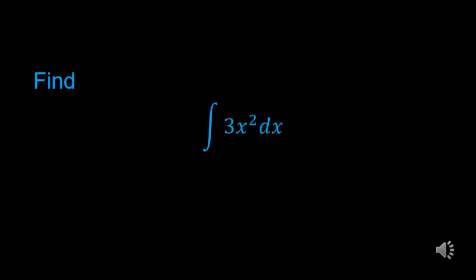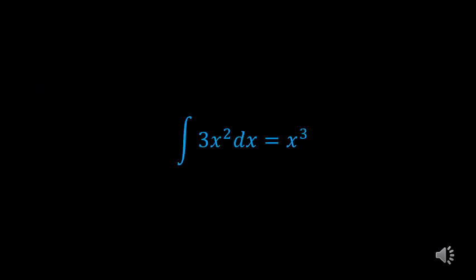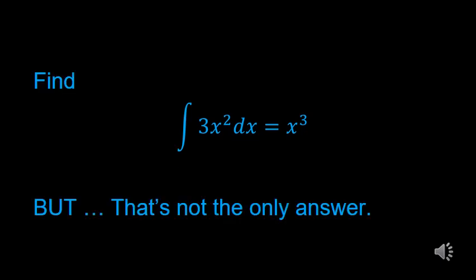I want to start by thinking about that first problem: the antiderivative of 3x² dx. This is asking you, what function would have 3x² as its derivative? What would you have to take the derivative of to get 3x²? I'm betting all three of you probably figured out the answer is x³, because if you took the derivative of x to the third power — take 1 times 3, subtract 1 from the exponent — you would get 3x². The problem is, there's not just one answer to this problem.